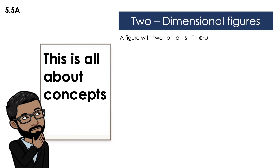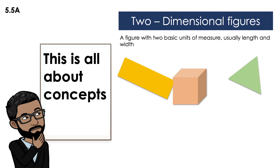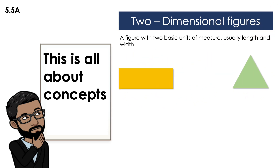This is all about concept. Let's first review the concept of a two-dimensional figure. This is a figure with two basic units of measure, usually length and width — only those two. So from this rectangle, this cube, and this triangle, which ones are two-dimensional figures? The rectangle and the triangle, because the one in the middle has a third dimension: height. So we're not working with that one anymore.